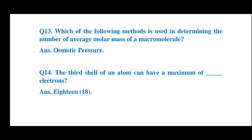Question number 14: The third shell of an atom can have a maximum of how many electrons? The answer is 18. The third shell of an atom can have a maximum of 18 electrons.